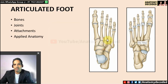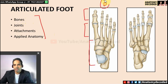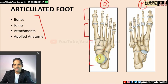Now let's cover the articulated foot. Tarsal bones: talus, calcaneus, navicular (in front of talus), cuboid (in front of calcaneus), and in front of navicular: medial cuneiform, intermediate cuneiform, and lateral cuneiform. Cuneiform means wedge-shaped; navicular means boat-shaped. Metatarsals are numbered 1–5 from the great toe side. Phalanges are 14 in number.